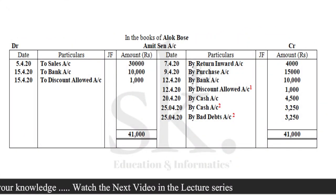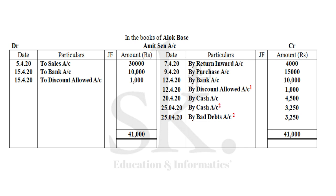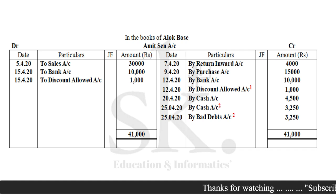Now we close the ledger account. Since Amit Sen was declared insolvent and the remaining Rs 3,250 has been considered as bad debt, there is no balance left to be paid. Amit Sen has paid Rs 3,250 and the rest Rs 3,250 stands as bad debt, so no further money is expected from this account. The debit total is Rs 41,000 and the credit total is also Rs 41,000, confirming the account is closed in the books of Alok Bose.